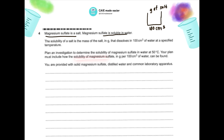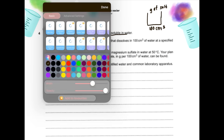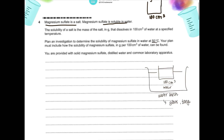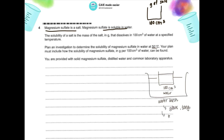You are provided with solid magnesium sulfate, distilled water, and common laboratory apparatus. Think logically: use a burette to measure exactly 100 cm³ of distilled water and pour it into a beaker. To ensure the temperature is 50°C, place this beaker in an electrical water bath. As a safety precaution, wear gloves while handling, and leave the beaker in the water bath for a couple of minutes for the temperature to reach 50°C.